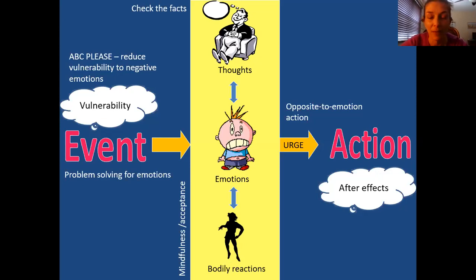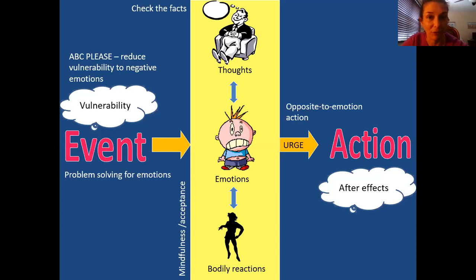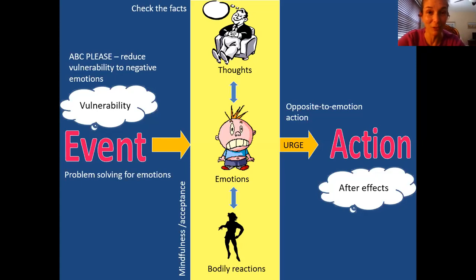Based on that middle stuff, we start to develop action urges — we feel like doing certain things in response to what we're experiencing on the inside. And then eventually we'll engage in an action, and from that action come certain consequences or after effects. DBT is really dealing with this well because the skills intervene at all different points of this diagram.